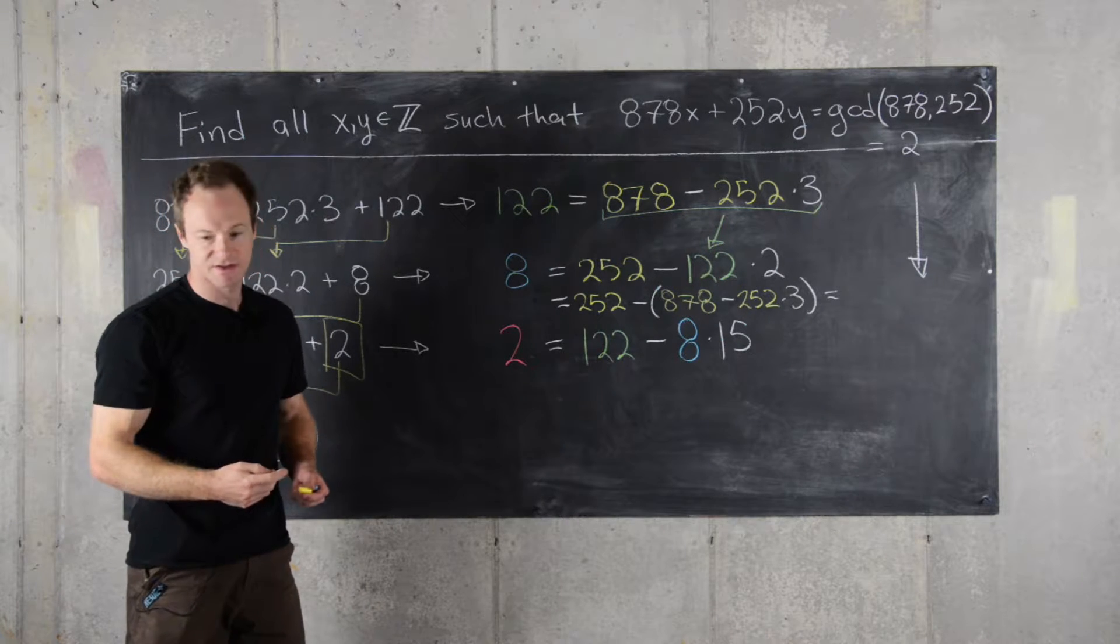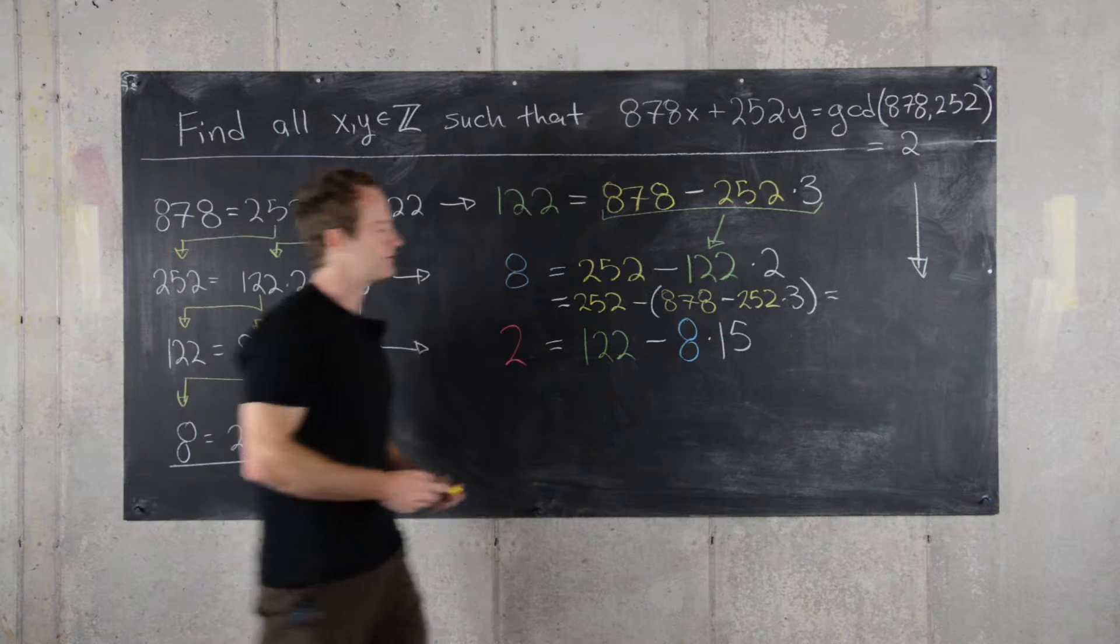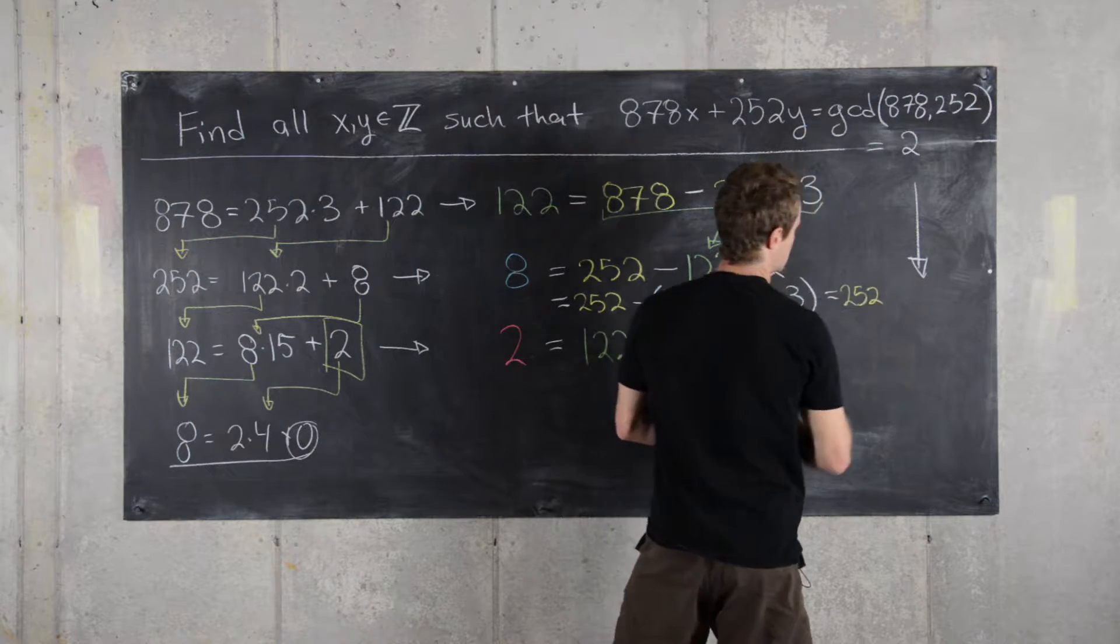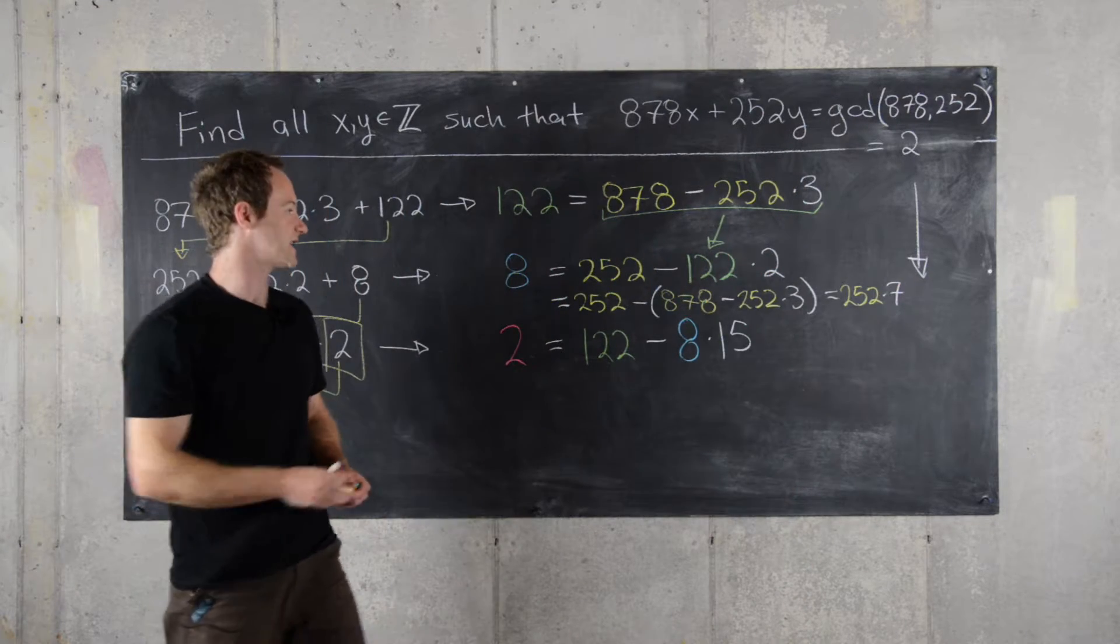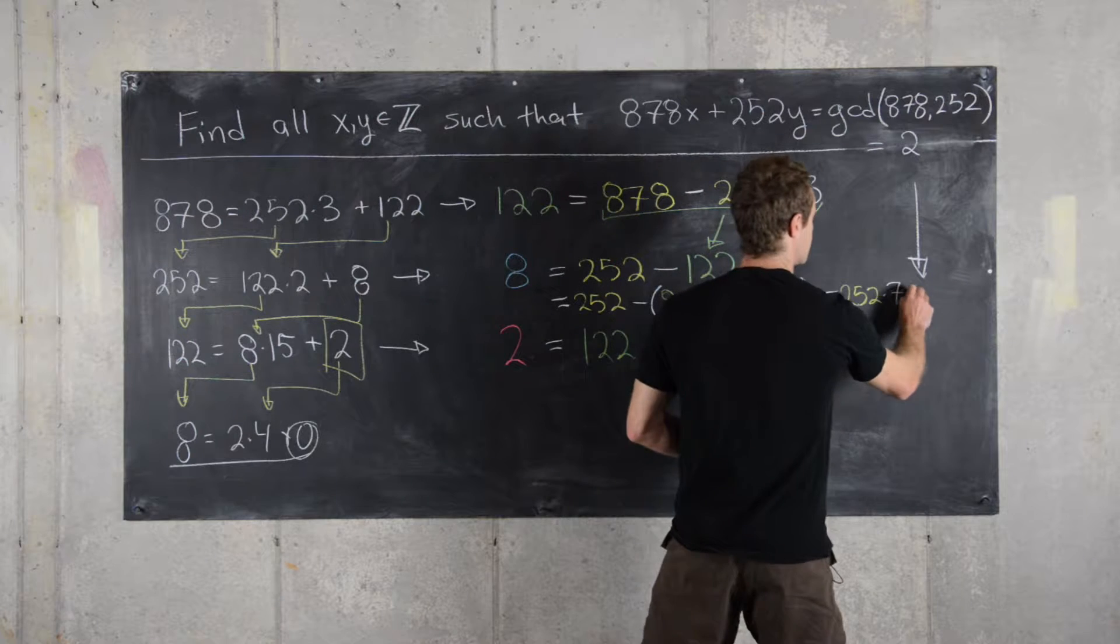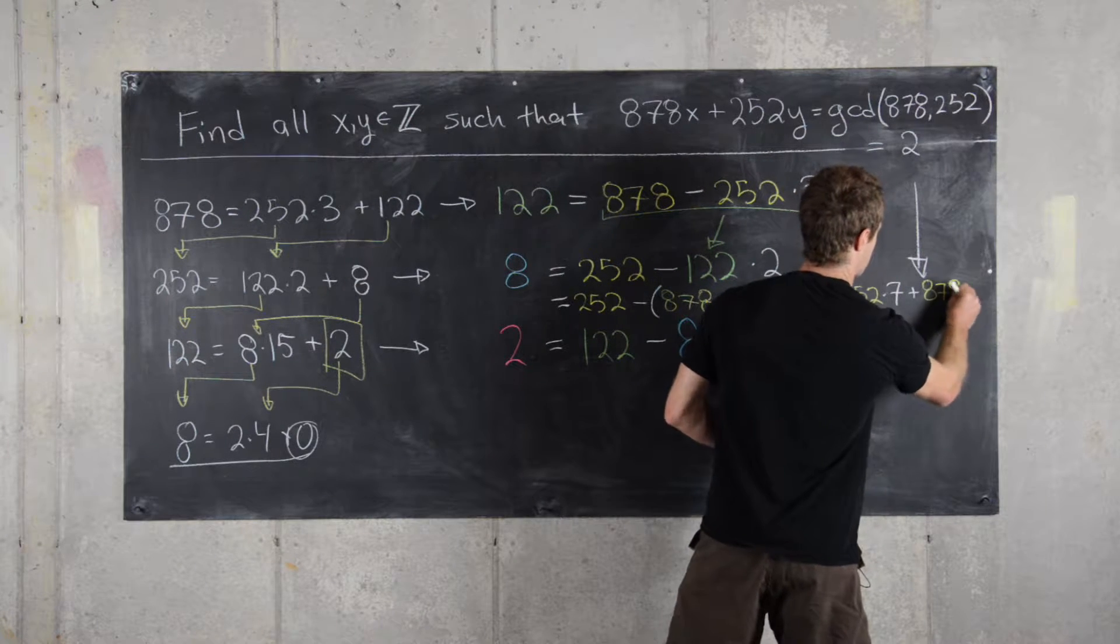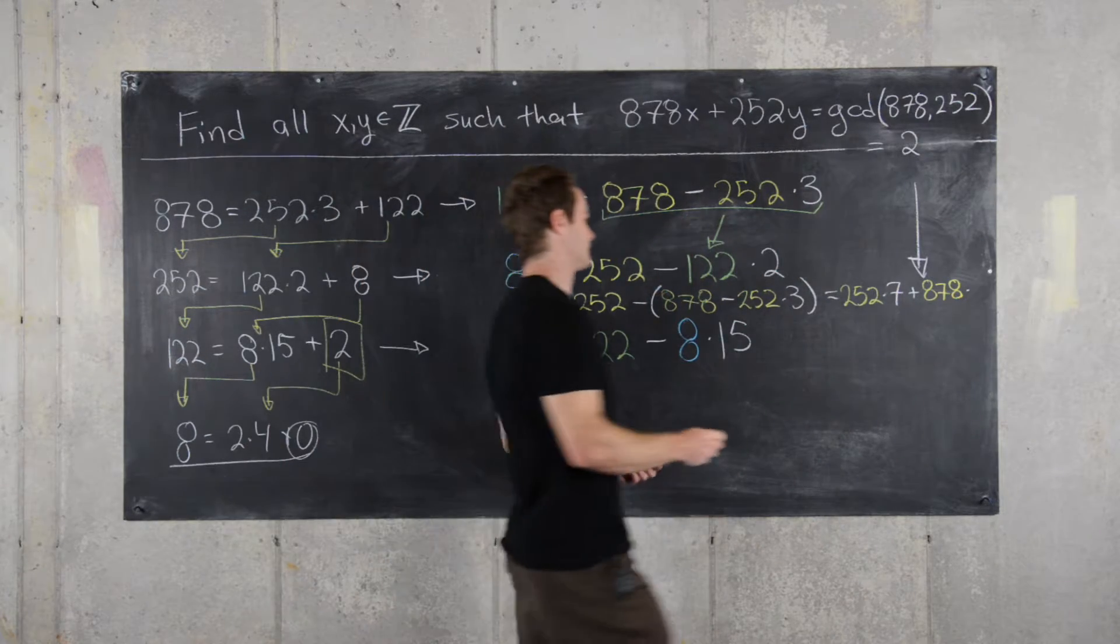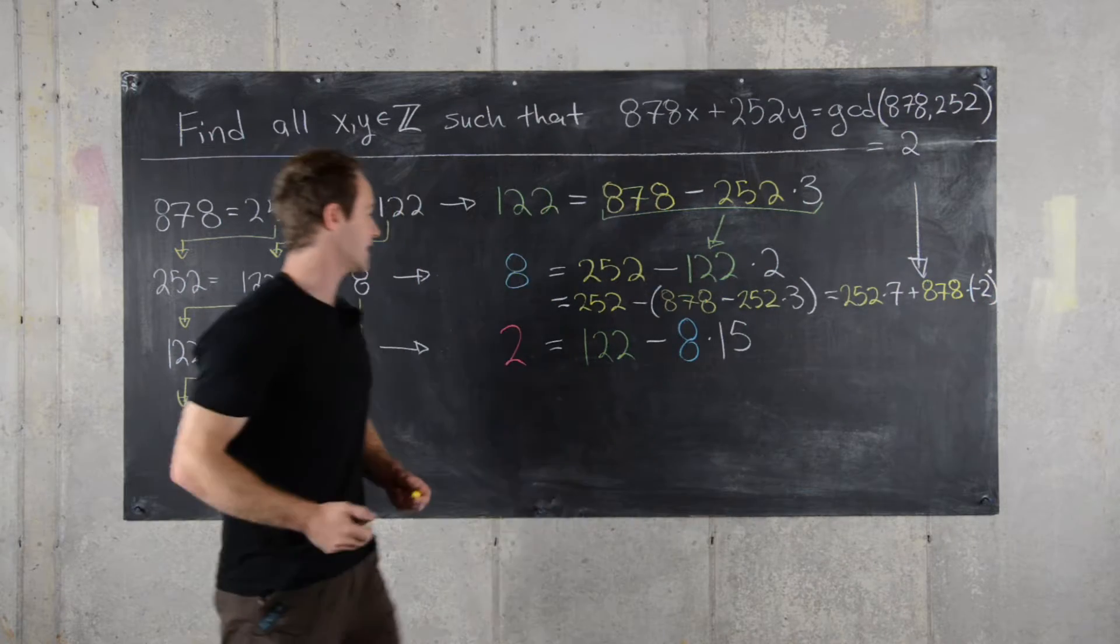So let's see what that gives us. That gives us 252 times 7 plus 878 times negative 2.